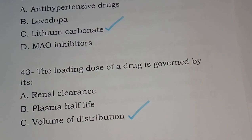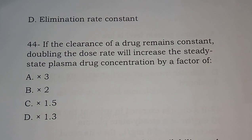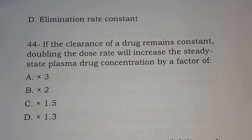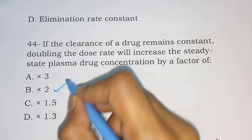Question 44: If the clearance of a drug remains constant, doubling the dose rate will increase the steady state plasma drug concentration by a factor of 3, 2, 1.5, or 1.3. Since clearance is constant, doubling the dose rate will double the steady state plasma concentration. Option B is the correct answer.